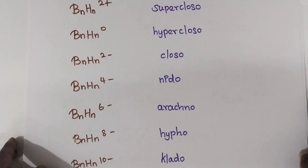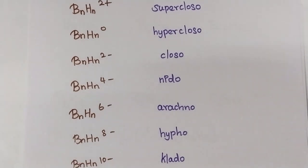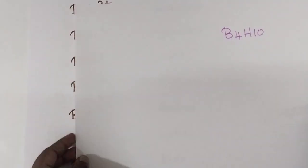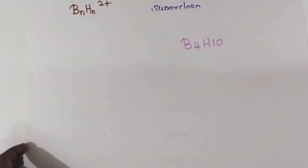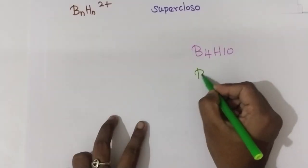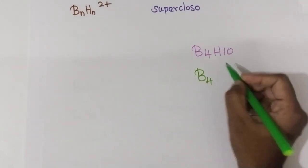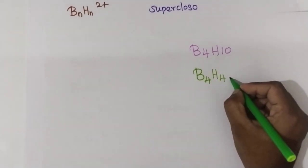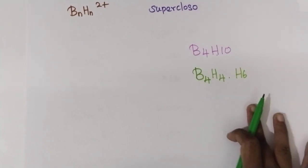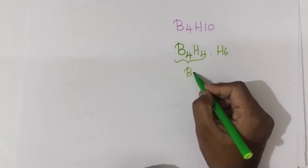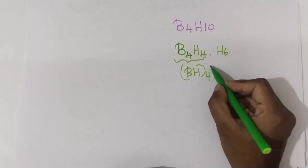What you should do is: suppose you are having a borane, for example B4H10. You have to write it in the BnHn formula. The number of boron and number of hydrogen should be same, so B4 means the hydrogen should also be 4, giving B4H4. The balance is H6. You convert this to BnHn format as B4H4, and then H6 will be eliminated as 6H+, giving a charge of 6 minus.